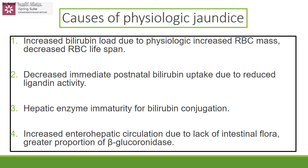Causes of physiologic jaundice include: increased bilirubin load due to physiologic increase in RBCs and decreased RBC lifespan; decreased immediate postnatal bilirubin uptake due to reduced ligandin activity; immature hepatic enzymes for bilirubin conjugation, which take around 10–15 days to mature; and increased enterohepatic circulation due to lack of intestinal flora and greater proportions of beta-glucuronidase, which breaks down urobilinogen and stercobilinogen back into bilirubin, increasing bilirubin reabsorption into the blood.